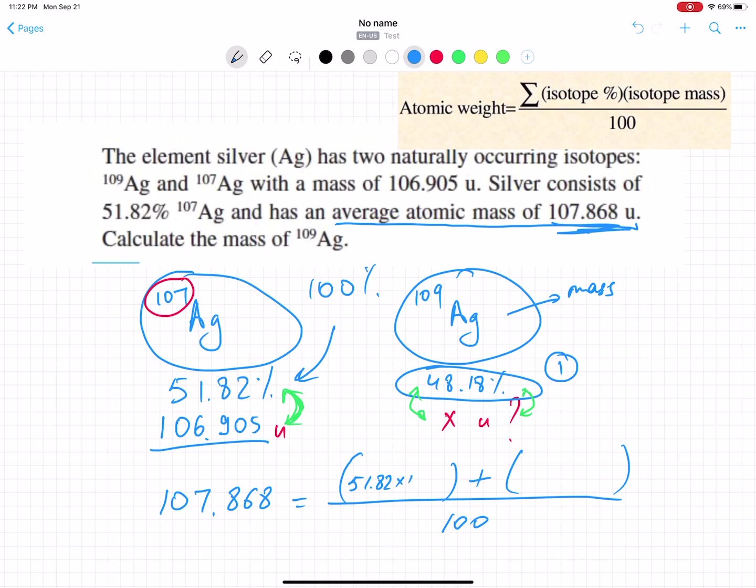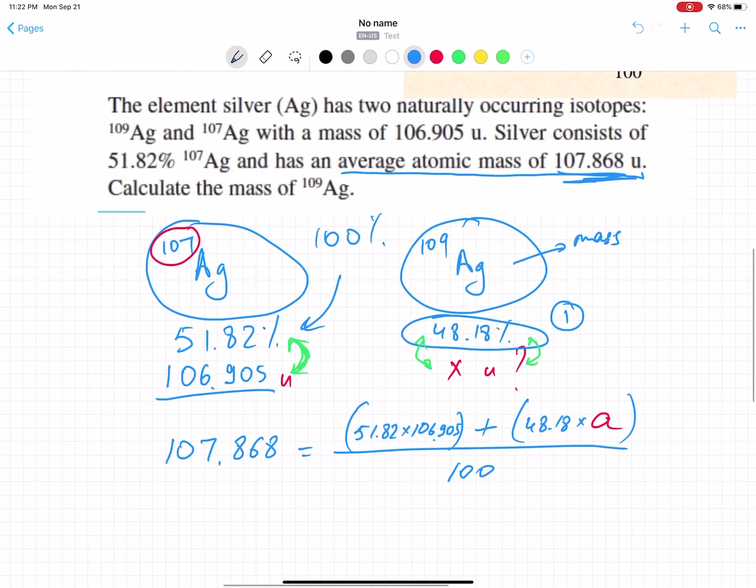I will have two isotopes and I need to multiply them: 51.82 times the mass of the first isotope, 106.905. The next isotope is 48.18 times - well, now I can put some variable like 'a' for example.